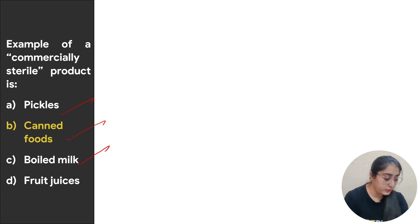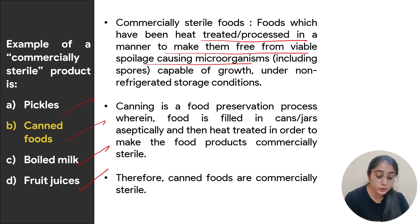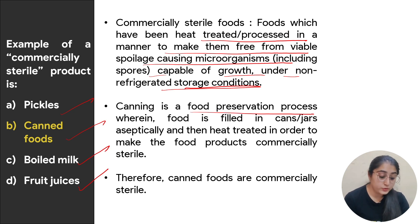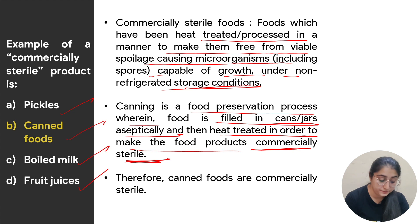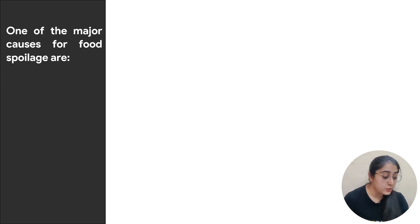Next: an example of a commercially sterile product is — options are pickle, canned food, boiled milk, or fruit juices. Commercially sterile food products are foods that have been heat treated to be free from viable spoilage-causing microbes including spores capable of growth under non-refrigerated storage conditions — they are shelf-stable products. Canning fills food into cans or jars aseptically then heat treats them to achieve commercial sterility. Therefore canned food is the correct answer.